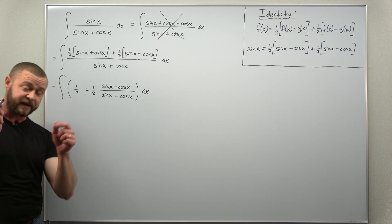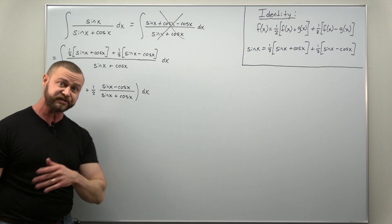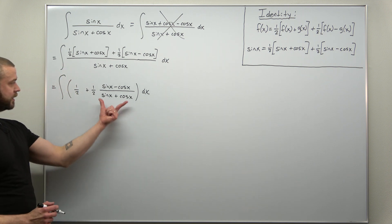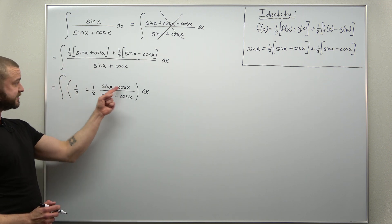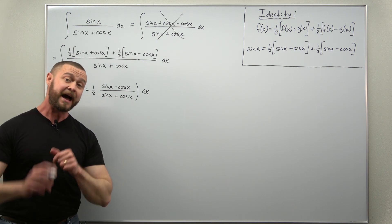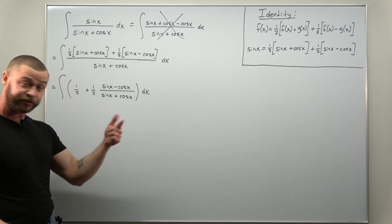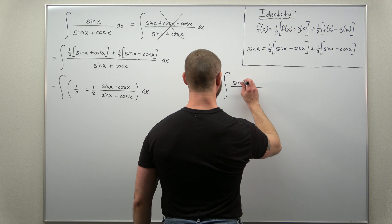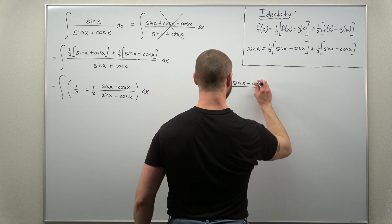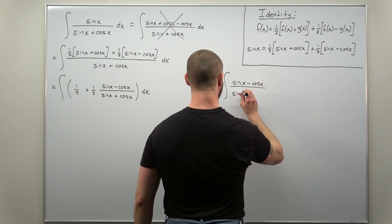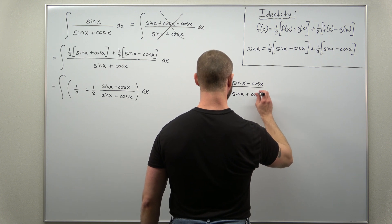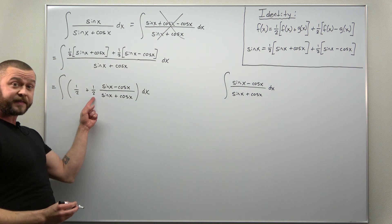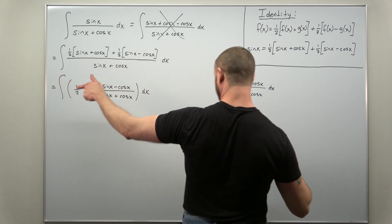You can pull the factor of one half out, but it doesn't really make a difference. The first term, one half, is very easy to integrate — you're just going to get one half x. The term sine minus cosine over sine plus cosine we can handle with a basic substitution, so let's go ahead and evaluate that antiderivative and then multiply back in the one half when we evaluate the whole integral.